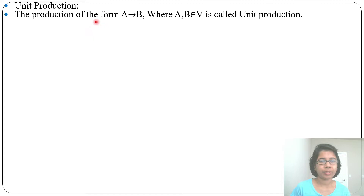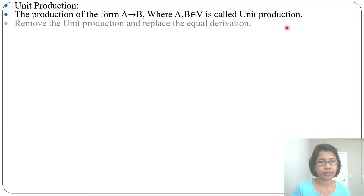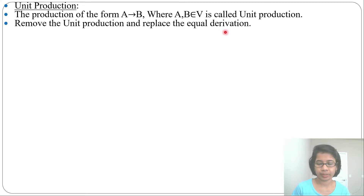A string is a collection of terminals. If a variable is not generating any terminal, it is useless. So we remove B and C productions and wherever B and C appear we remove them. Now, unit production: a production of the form A tends to B, where both A and B are variables, is called a unit production. We need to remove unit productions and replace them with equal derivations.